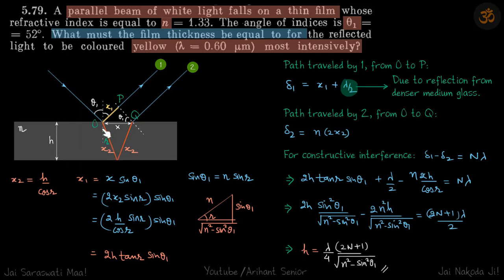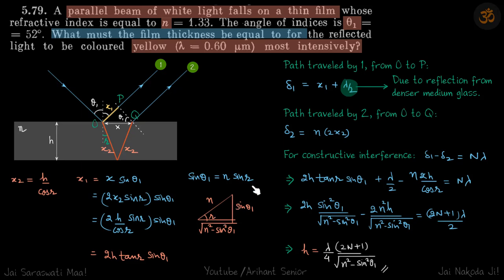X2 can immediately be seen as H divided by cos R. X1 is X sin theta-one. We can relate X and X2: X is twice X2 sin R. Since X2 is H over cos R, we substitute that in. We are not given R but can find it by Snell's law: sin theta-one equals N sin R, so sin R equals sin theta-one over N.